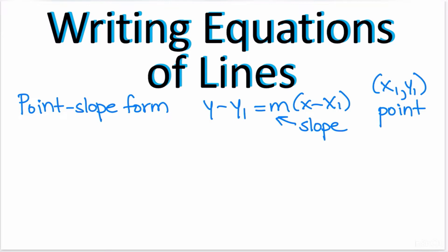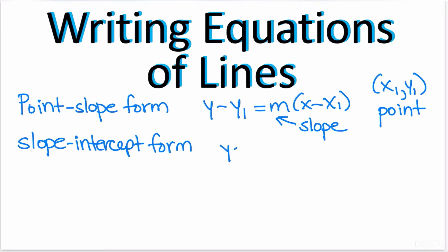The other way that we can write the equation of a line is called slope-intercept form. This is the most common one: y equals mx plus b, where m is the slope and b is the y-intercept.